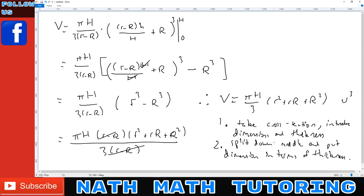In step three, you find delta V, then integrate to find V. That's the basic procedure to finding volumes using cross sections. Make sure you take the cross section and introduce a dimension and thickness variable, and you're going to split down the middle.